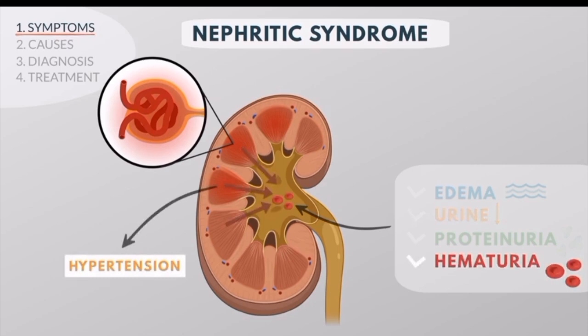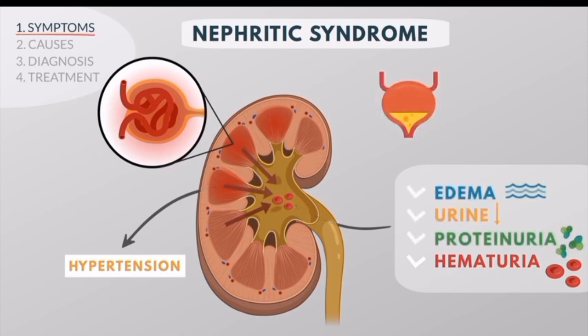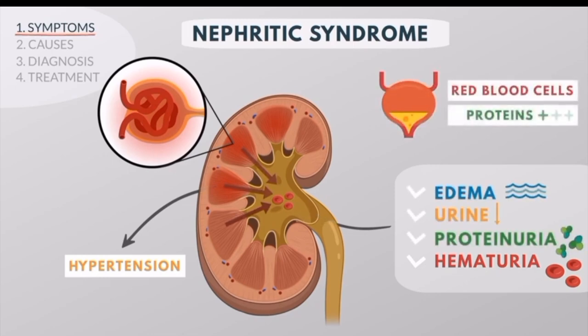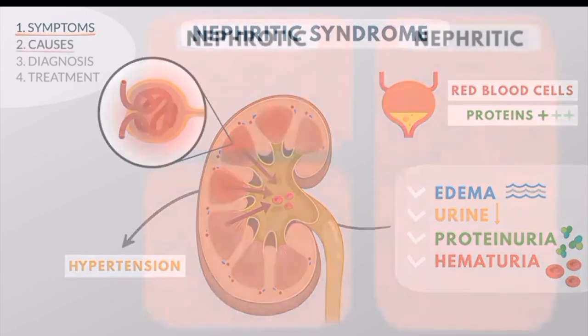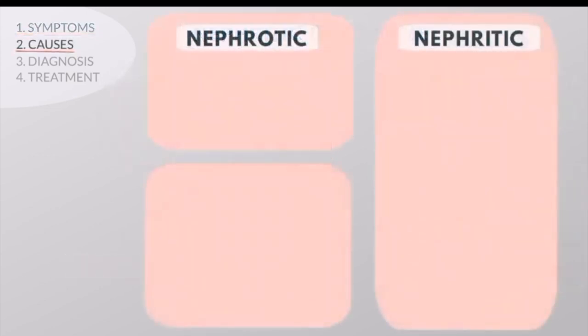Hematuria is the result of passage of red blood cells through the damaged glomerulus. You would also expect sedimentation of red blood cells and protein, but not to the same level as in Nephrotic syndrome.